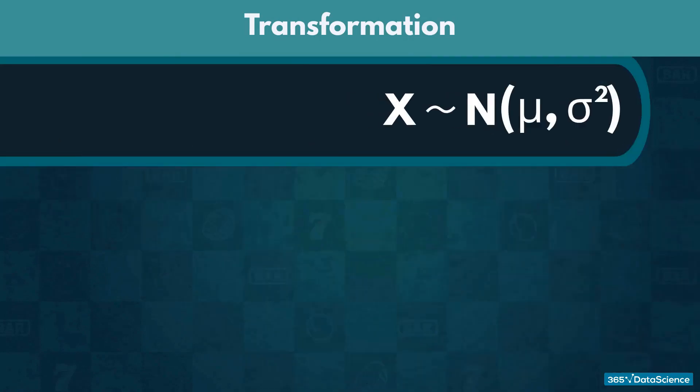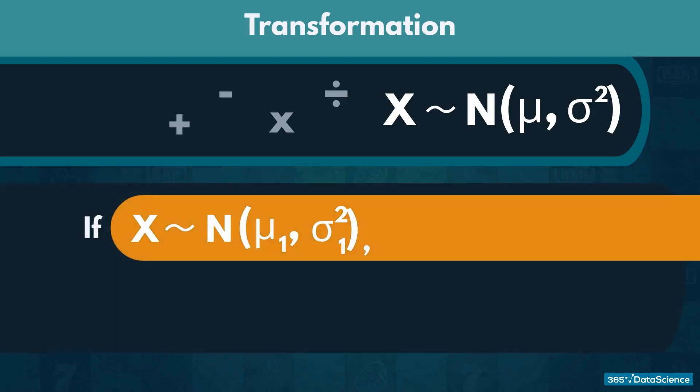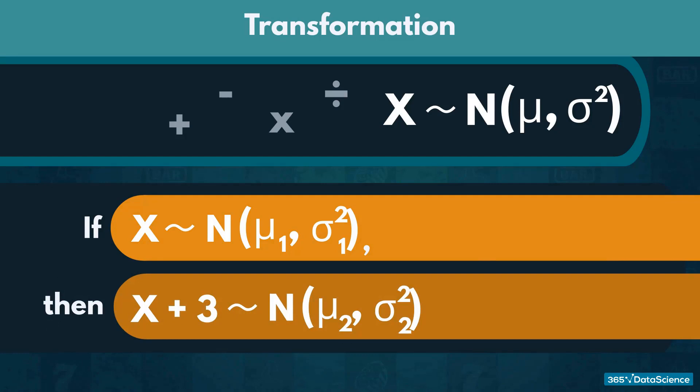For normal distributions, we can use addition, subtraction, multiplication, and division without changing the type of the distribution. For instance, if we add a constant to every element of a normal distribution, the new distribution would still be normal.